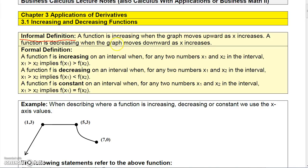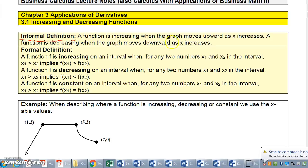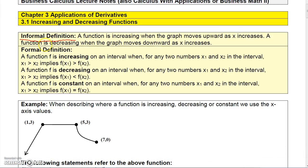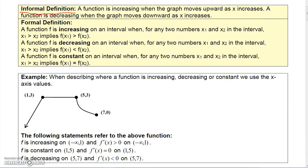A function is increasing when the graph moves upward as x increases, and it's decreasing if the graph moves downward as x decreases. And of course it's constant if it stays the same.